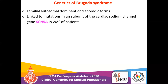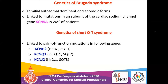For Brugada syndrome, two forms exist: autosomal dominant and sporadic. It is linked to mutation in the cardiac sodium channel gene SCN5A, found in about 20% of patients, making it the commonest gene associated with Brugada syndrome. Short QT syndrome is associated with mutations in three genes: KCNH2, KCNQ1, and KCNJ2.